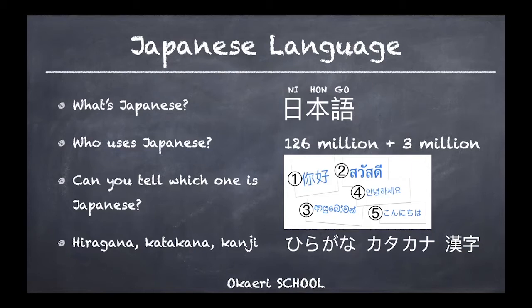Plus, when it comes to Japanese learners — that's us — this is only based on registered learners on apps or programs, so the actual number should be even more. There are a lot, and it's very happy to know that. You might have seen what Japanese looks like, but can you tell which one in this picture is Japanese? There are five different languages used in Asia — can you find the Japanese one?